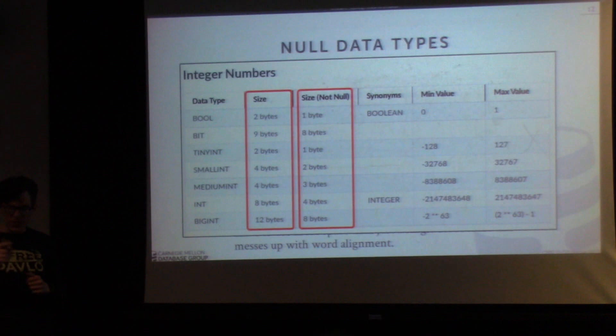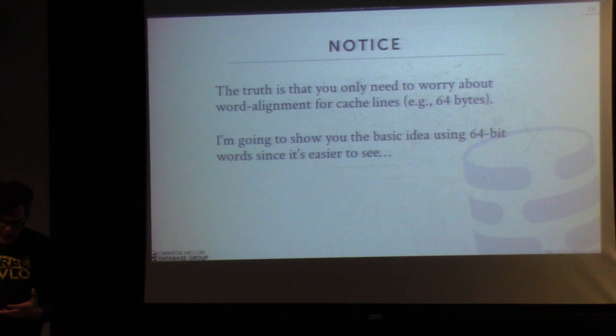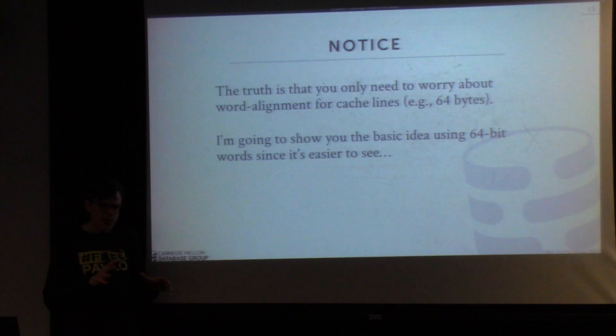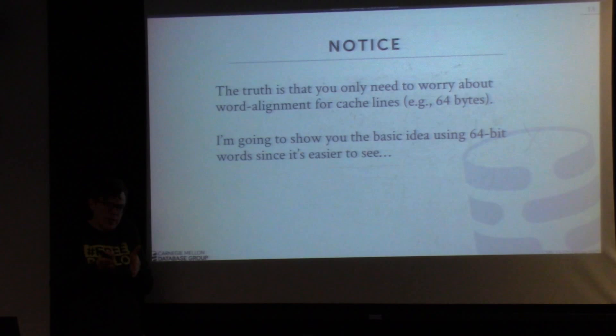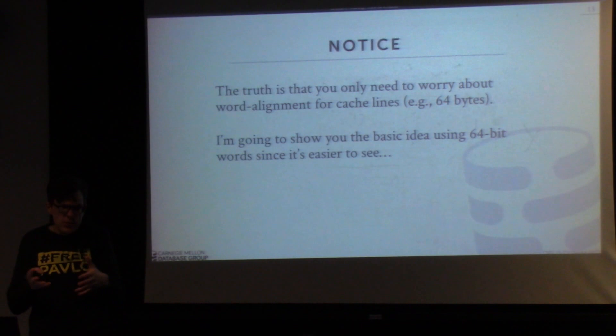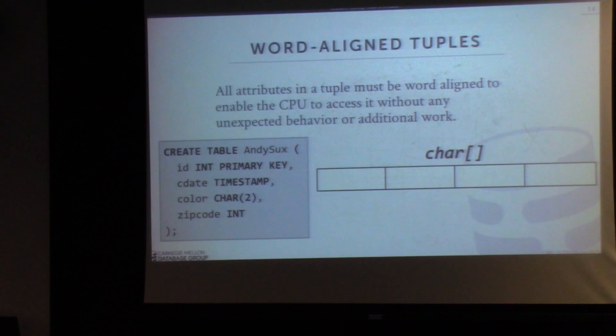Now let me describe word alignment and why we care about it in memory databases. I want to caveat: what I'm about to say is not exactly how CPUs actually work. I'll describe word alignment in the context of 64-bit words, but in real CPUs you care about cache line words or 64 bytes. I'm showing what word alignment means at a smaller scale — just easier to see.